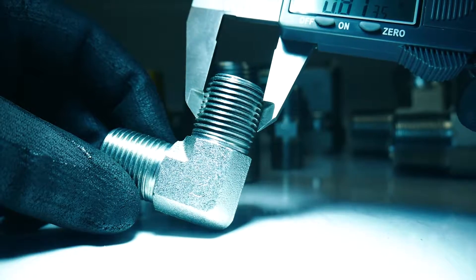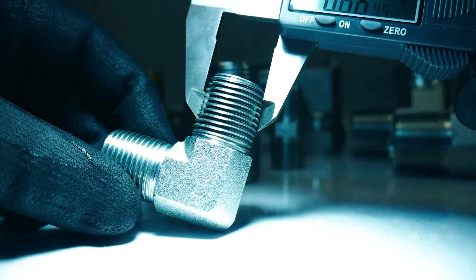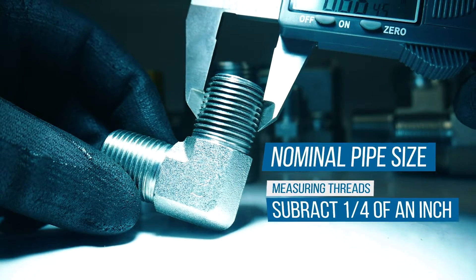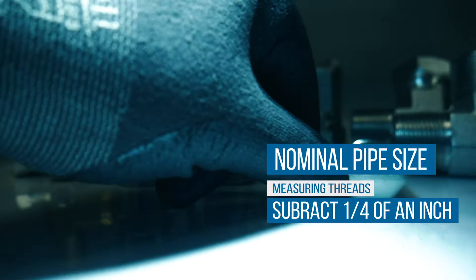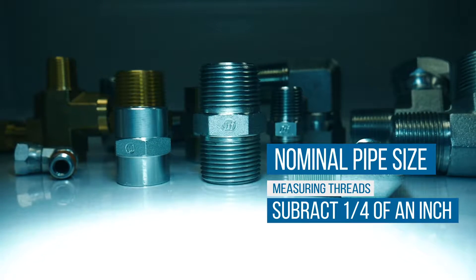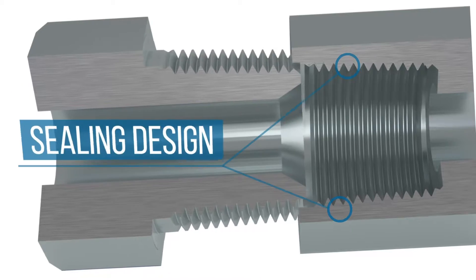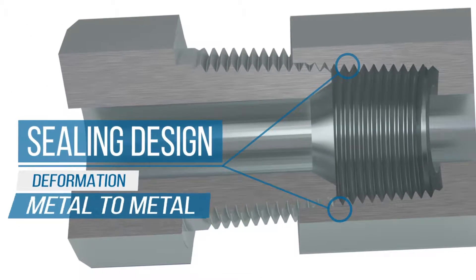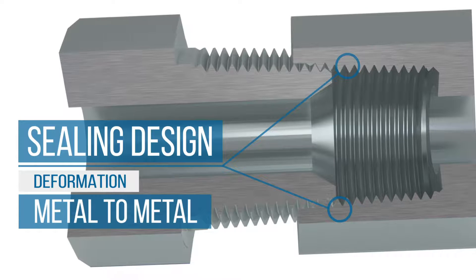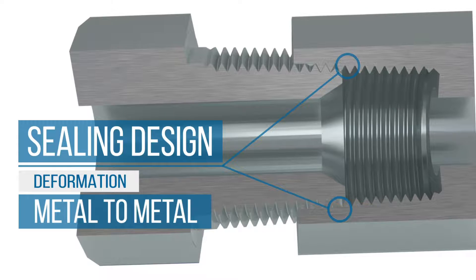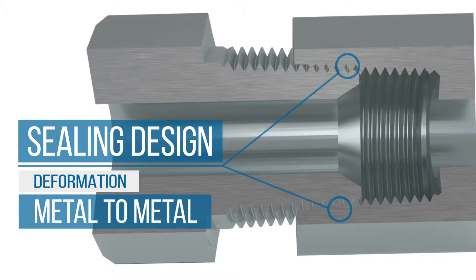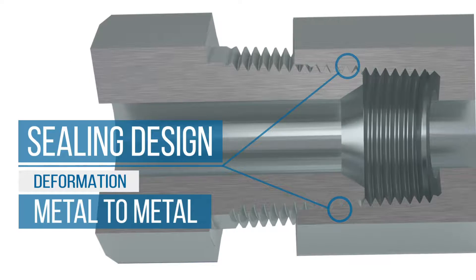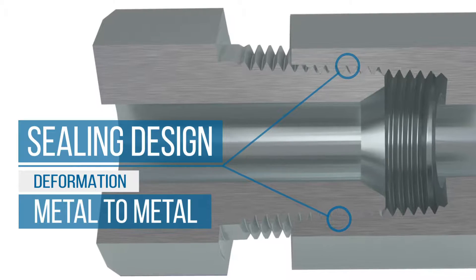The nominal pipe size can be identified by physically measuring the thread diameter then subtracting a quarter of an inch. NPT connections rely on thread deformation, a metal-to-metal sealing design where the threads of the connectors themselves form together.